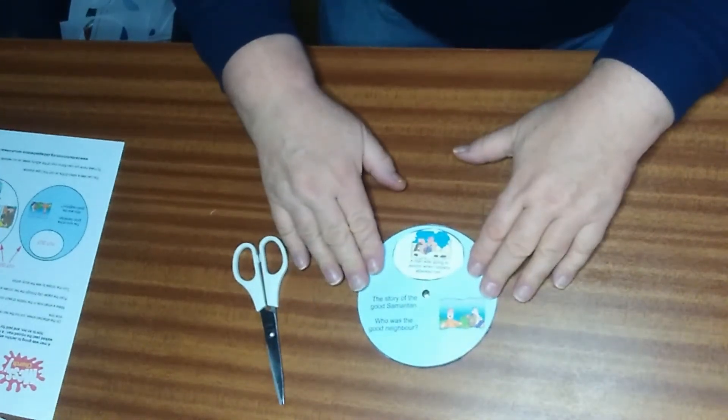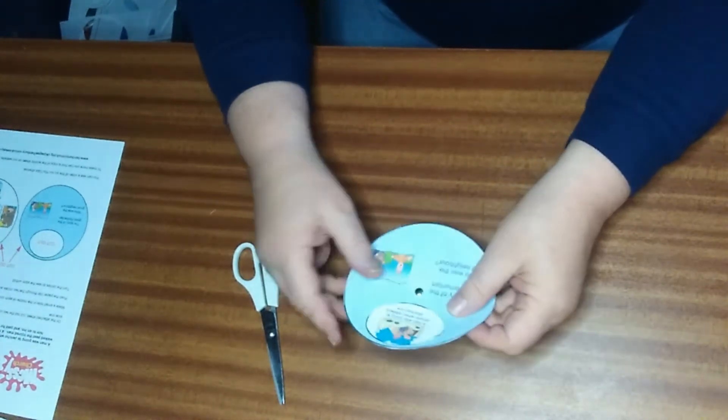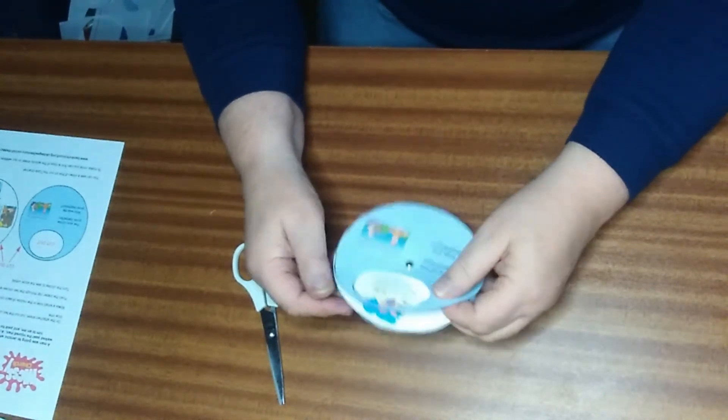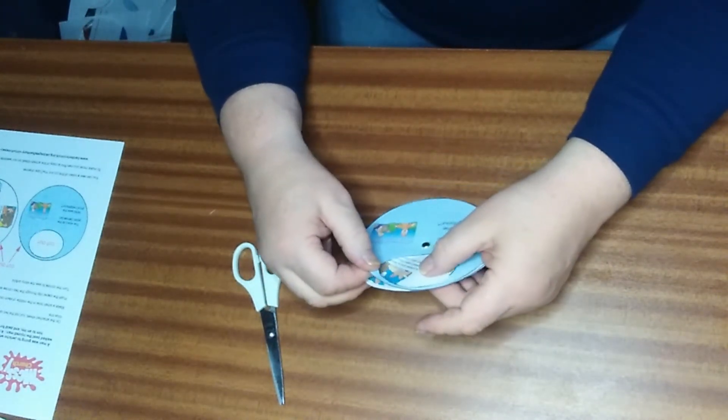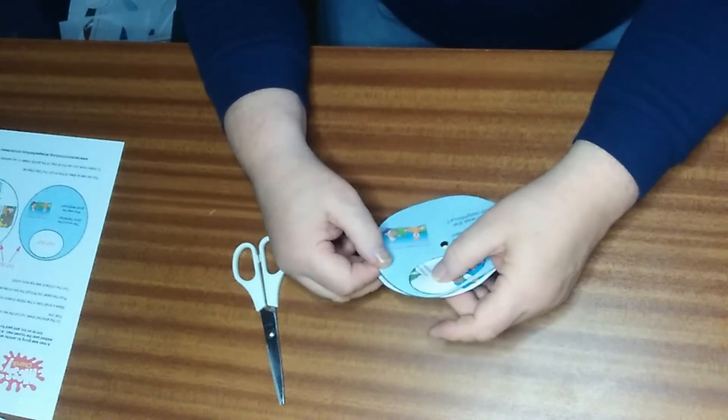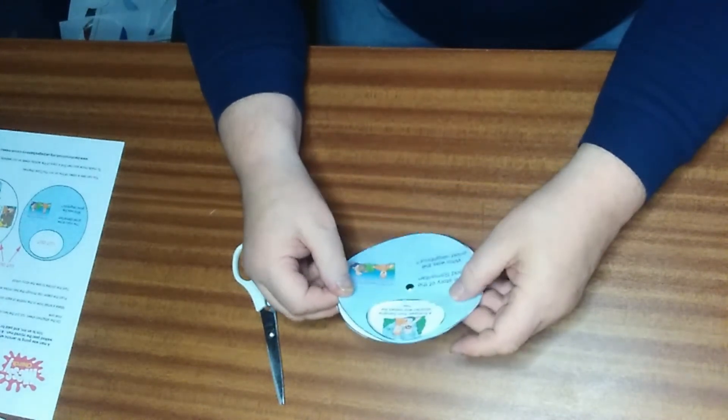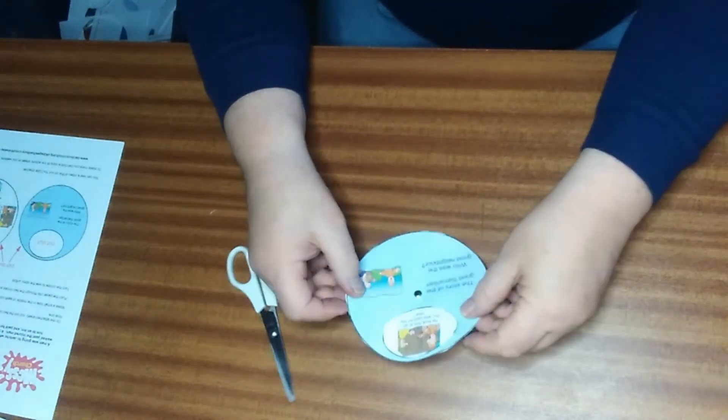In order to read the story, you just turn the white piece of paper underneath. That's the easiest way in the end. And you can read each part of the story as it appears in the window. There we are.